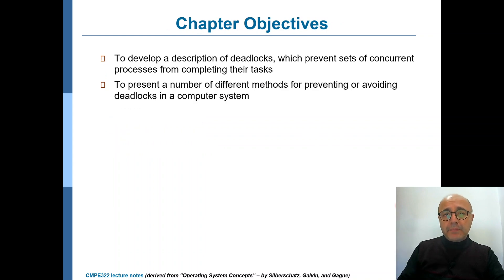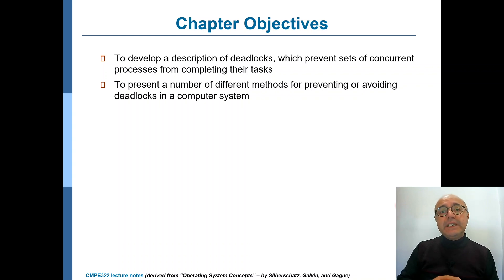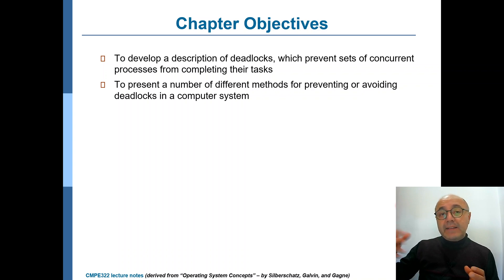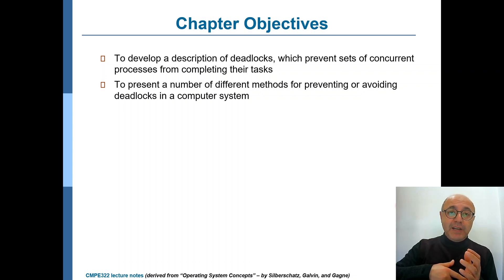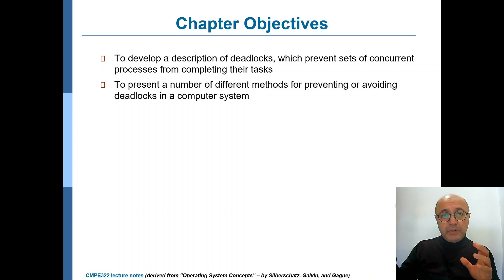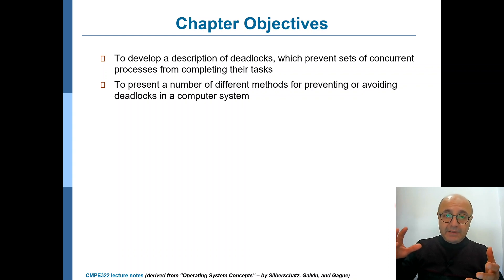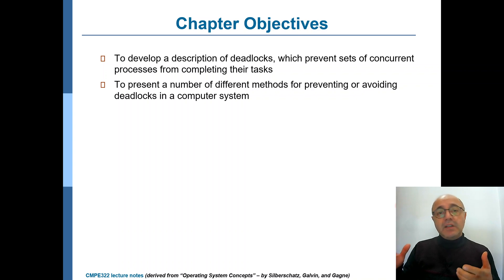So first of all, what's a deadlock? If a process P1 holds a resource and is waiting for the resource held by another process to become available, while that other process waits for a resource held by P1 to be available, then we have those two processes waiting for each other. They're both in a waiting or blocked state, therefore none of them could proceed, and this waiting state will never be broken. Hence we say these two processes are deadlocked.